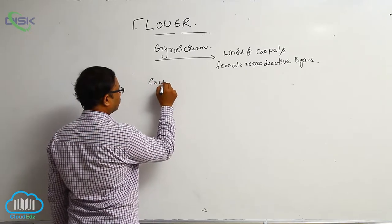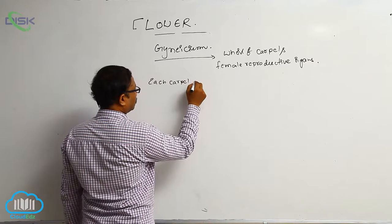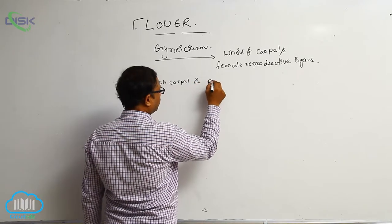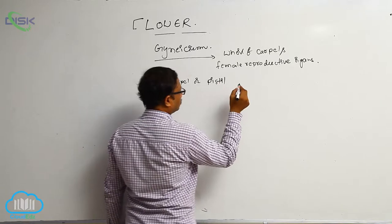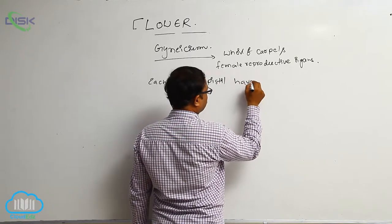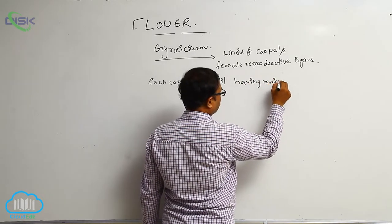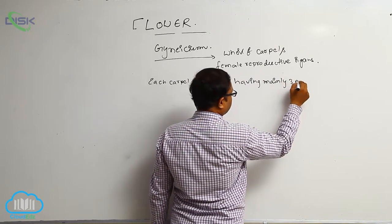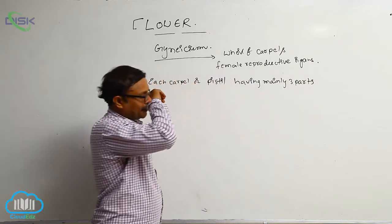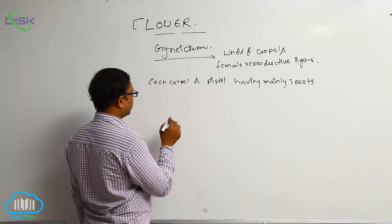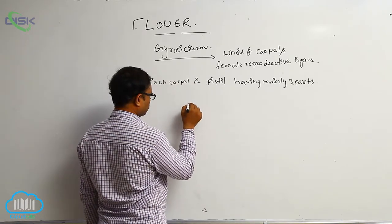Each carpel has mainly three parts. Generally, look at the diagram.